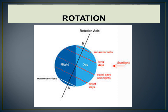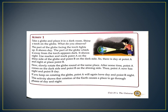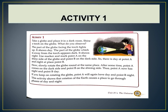Now we will discuss an activity you can also do at home to understand rotation. Take a globe and place it in a dark room. Shine a torch on the globe. The part of the globe facing the torch is lit up — it shows day. The part away from the torch appears dark — it shows night. Mark point A on the lit side (day side) and point B on the dark side (night side). So there is day at point A and night at point B.